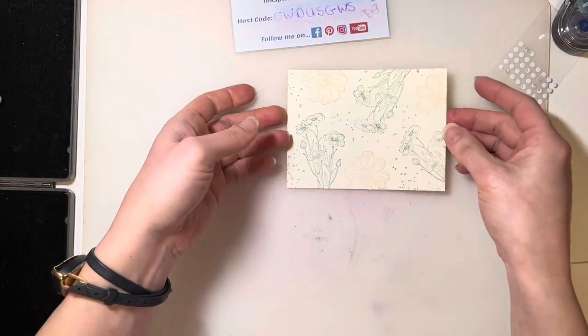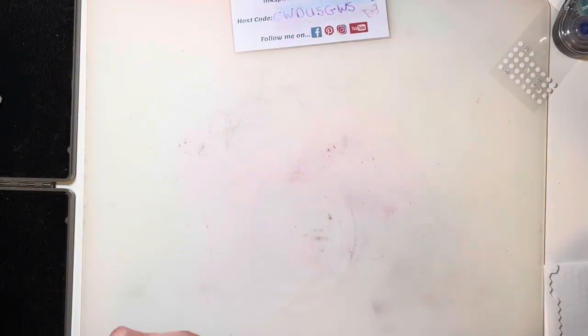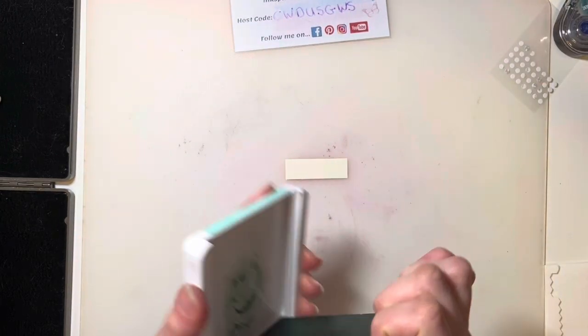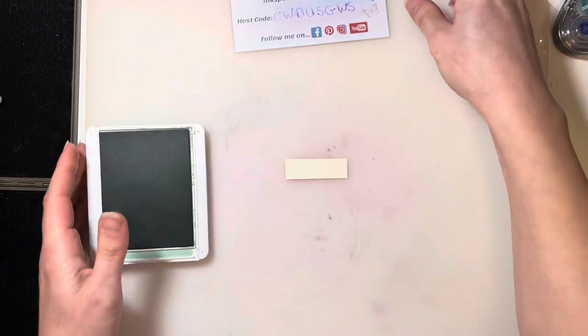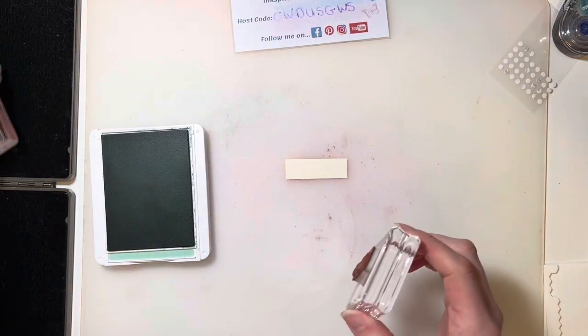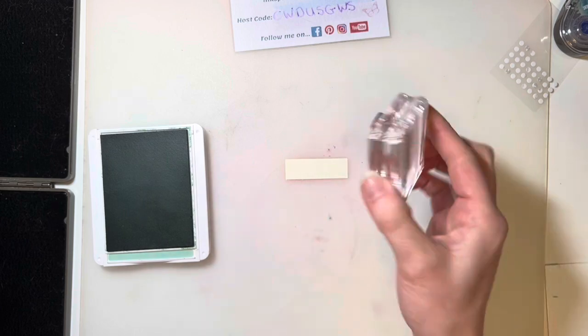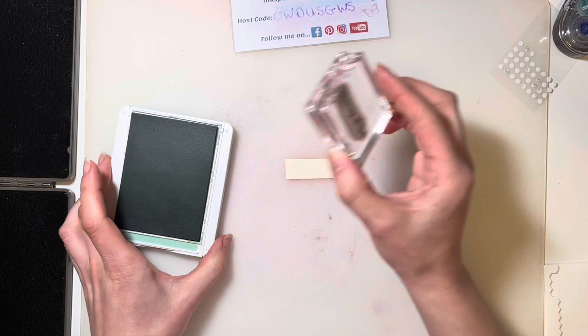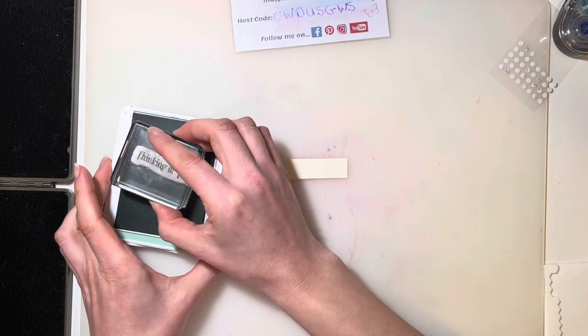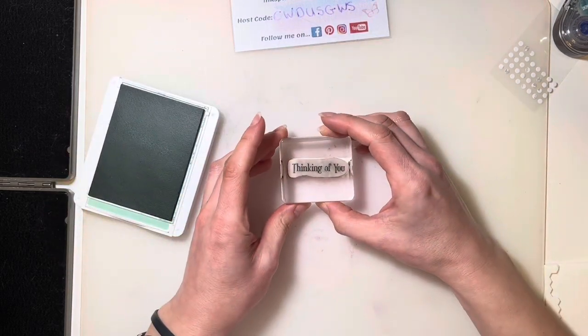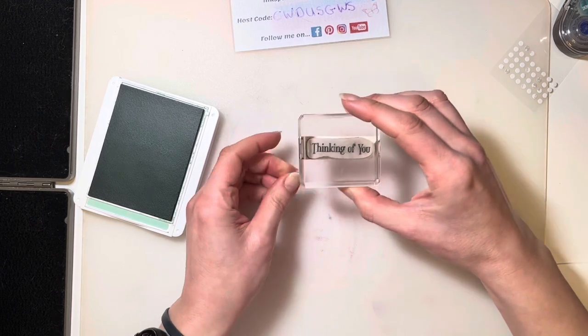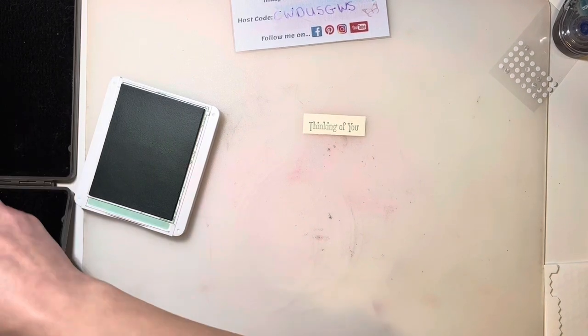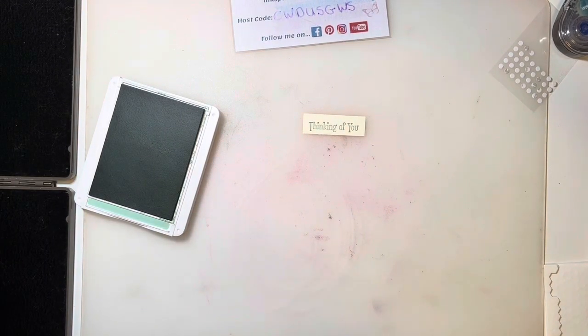And then for our last bit of stamping, set that aside and grab your smallest piece of Very Vanilla right there and your Mint Macaron ink pad. I thought for this one, thinking of you would be nice. You can also use the you're too kind phrase. So just gently going to tap that. There we go. All right, so that's it for our stamping. I'm going to close this up.